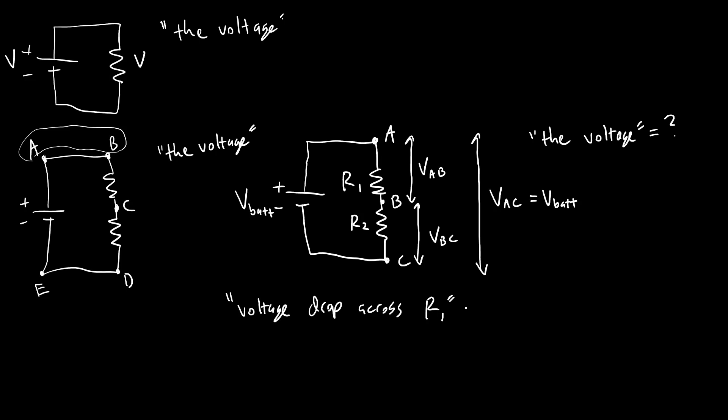Say if somebody refers to the voltage drop across R1, then the way I have labeled things here, that is going to be the voltage VAB. Similarly, the voltage drop across R2 is going to be what I've labeled VBC.